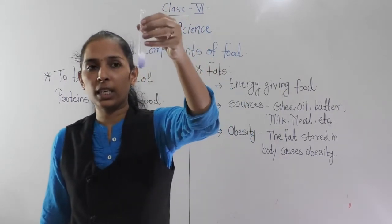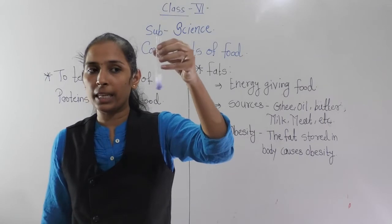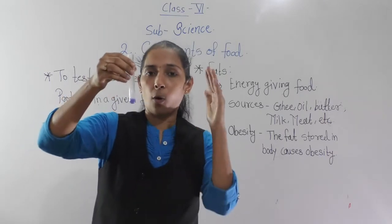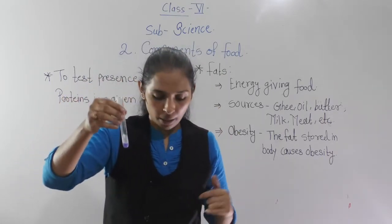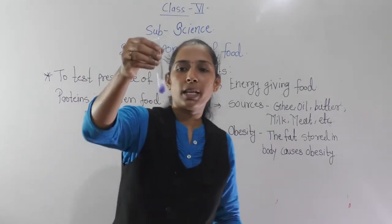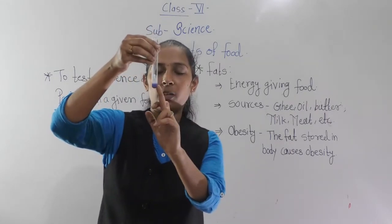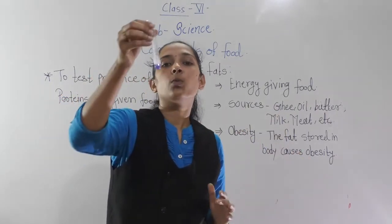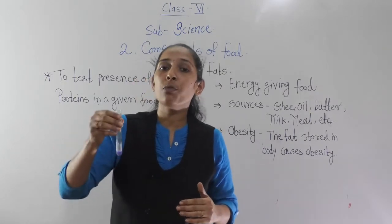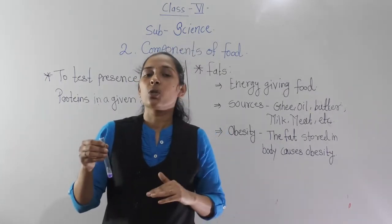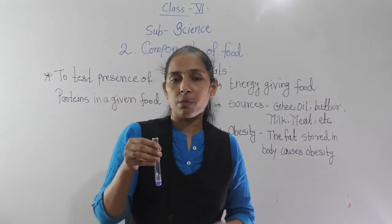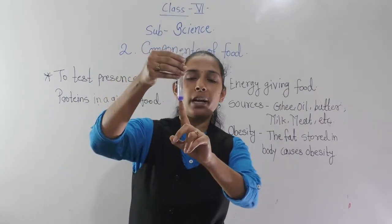So dear students, can you see the change in colour? The colour of milk is white, but when we add these chemicals — copper sulphate solution and sodium hydroxide — we can see a change in colour. We get a violet colour. This violet colour in our conclusion indicates that the given food sample, which is milk, contains protein in it. Because by adding the chemicals, it produces the violet colour.